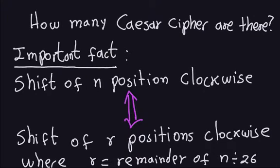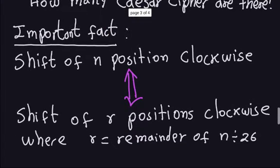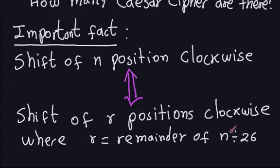In the previous video we were looking at this question: how many Caesar ciphers are there? We arrived at this important fact — if you have a shift of n positions clockwise, that is equivalent to having a shift of r positions clockwise, where r is the remainder of n divided by 26.